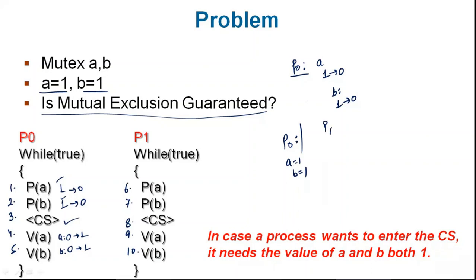Now going to the P1 process, statement number 6: A's value is 1, P operation makes A's value 1 to 0. Statement 7: P(B), B's value 1 to 0. Since both B and A had positive values, critical section entry occurs for P1 as well. After entry, V operations are performed: A's value goes 0 to 1 and B's value also goes 0 to 1.